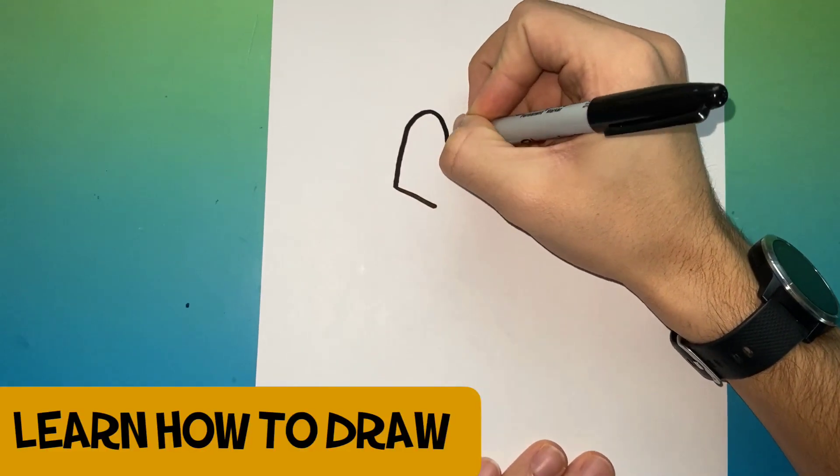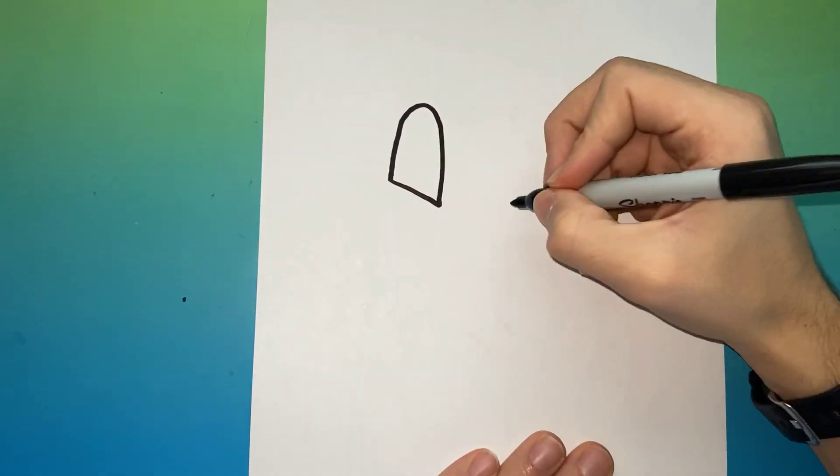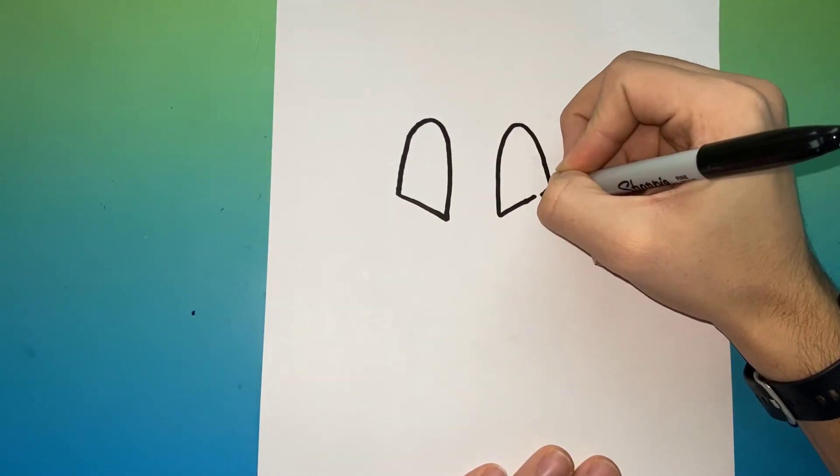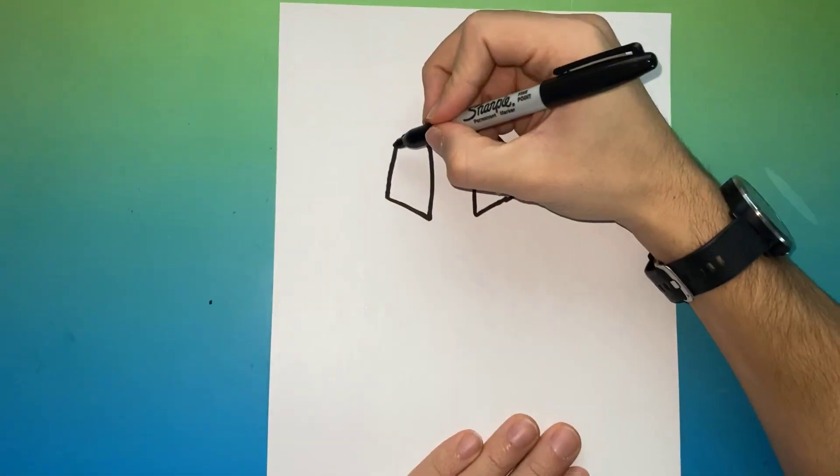You're watching Learn How to Draw. Thank you for watching this video. Today we will be learning how to draw Charizard from Pokemon. In the middle of the page, you will draw two lines, and you will complete the lines.